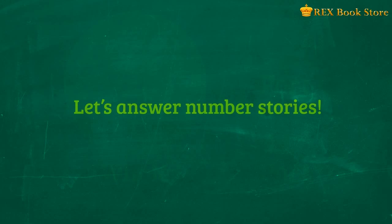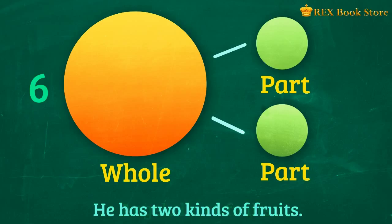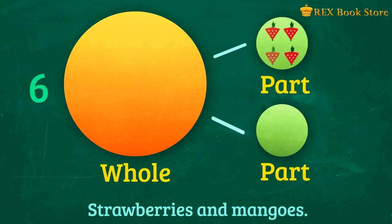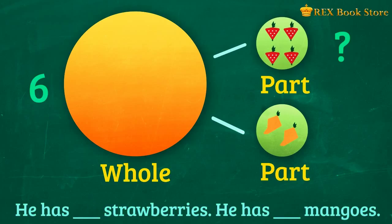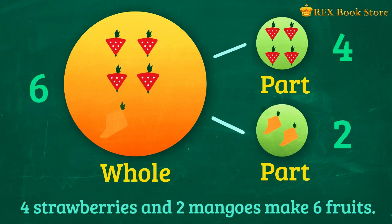Now that you know your number bonds, we can try answering these number stories. Angelo has 6 fruits. He has 2 kinds of fruits — strawberries and mangoes. How many strawberries does he have? Let's count together: 1, 2, 3, 4. He has 4 strawberries. And how many mangoes does he have? Let's count them: 1, 2. He has 2 mangoes. So 4 strawberries and 2 mangoes make 6 fruits in all.